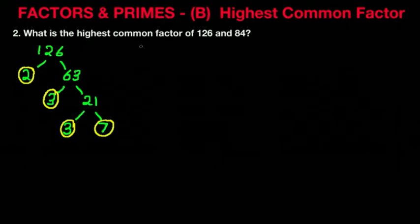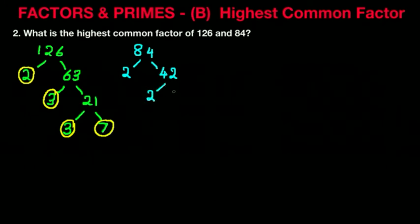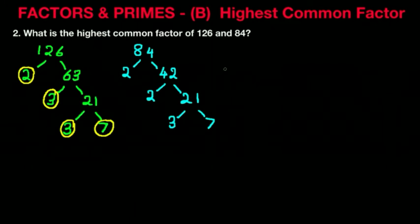Now the second number we have is 84. Using the same principle with the factor tree, divided by 2 because it's an even number, gives us 42. 42 is another even number — divided by 2 gives us 21. And 21 is 3 times 7. So let's circle all the prime factors of the number 84: it's 2, 2, 3, and 7.